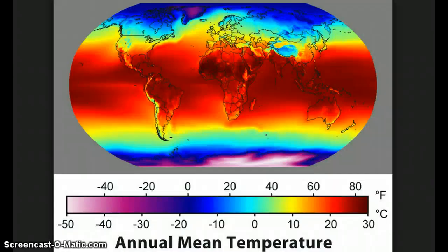We can see this happening if we look at a world map that shows the annual mean temperature or the annual average temperature. Here at the equator, this is where the temperatures are the highest, upwards of 80, 85 degrees Fahrenheit.